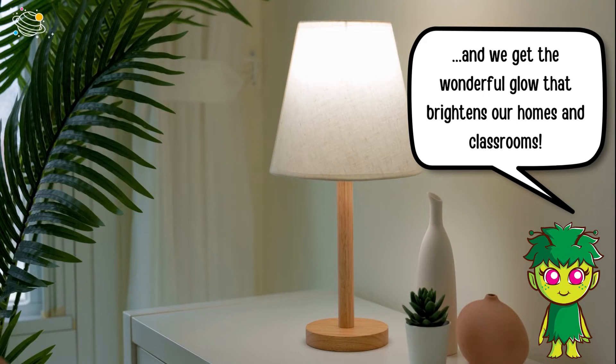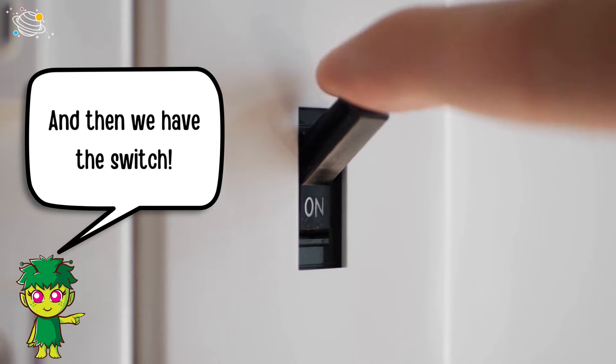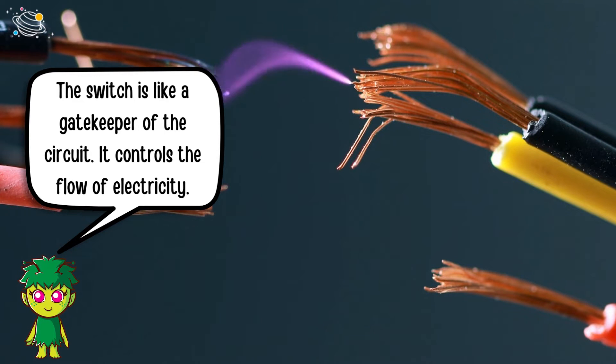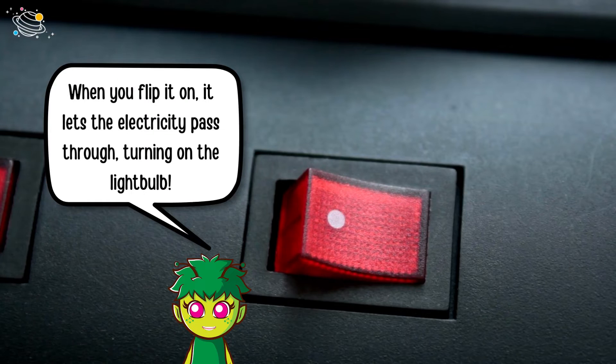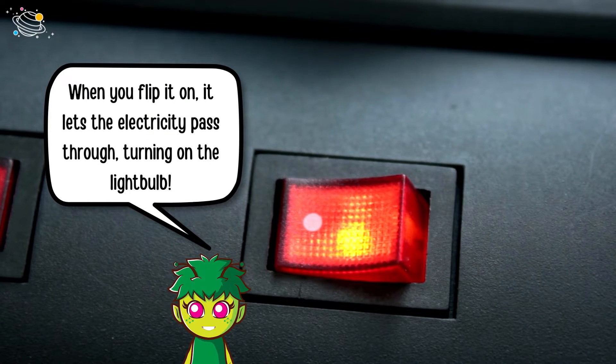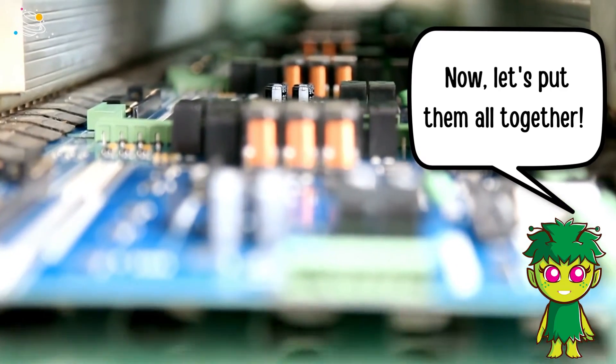And then we have the switch. The switch is like a gatekeeper of the circuit. It controls the flow of electricity. When you flip it on, it lets the electricity pass through, turning on the light bulb.